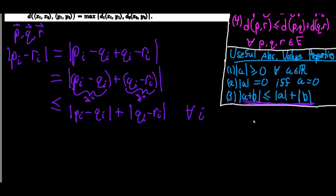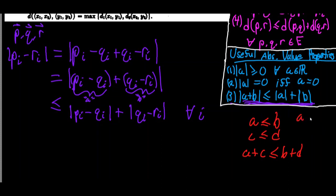We use the following fact: if a ≤ b and c ≤ d, then a + c ≤ b + d. This follows from: if a < b and c ≤ d, then a + c < b + d.